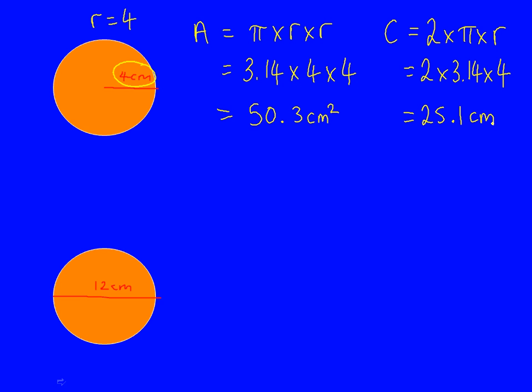Let's have a go at this second example, which is a little bit harder. They give us the number 12 in the middle of the circle, but that's not the radius, because that's not halfway across the circle — it's all the way across the circle. So r, in this case, would be half of that number, so r would be 6.